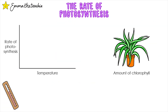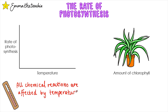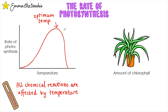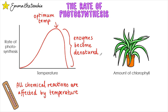The third factor that can affect the rate of photosynthesis is temperature. All chemical reactions are affected by temperature. Increasing the temperature increases the rate of photosynthesis until it reaches the optimum temperature. After this point, the enzymes that catalyse this reaction become denatured. You can learn more about this in the factors affecting enzymes video.